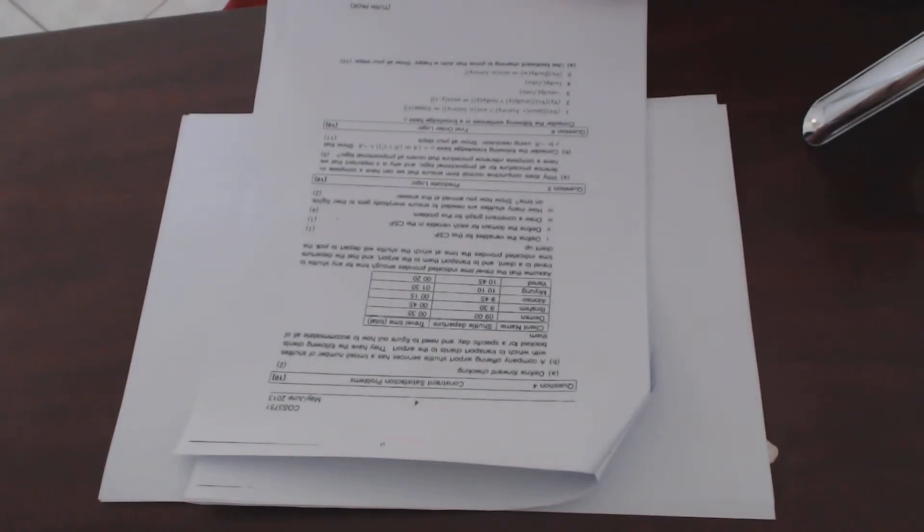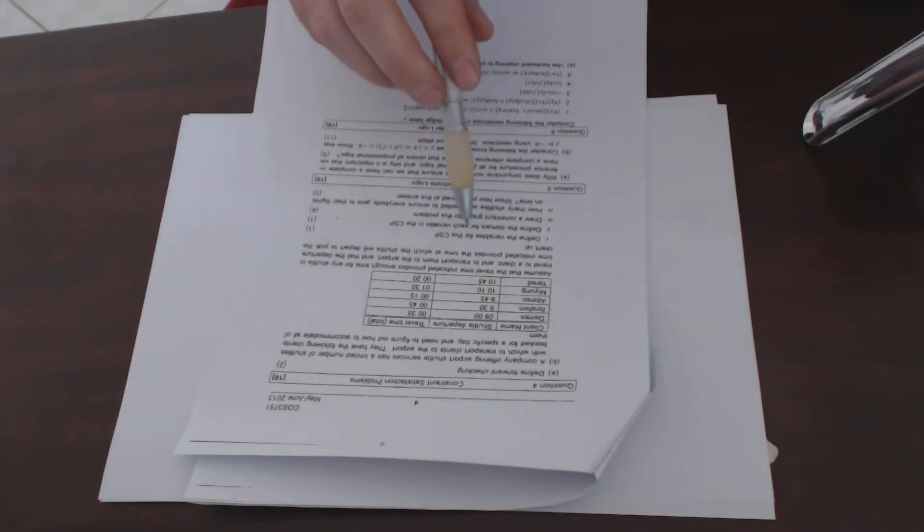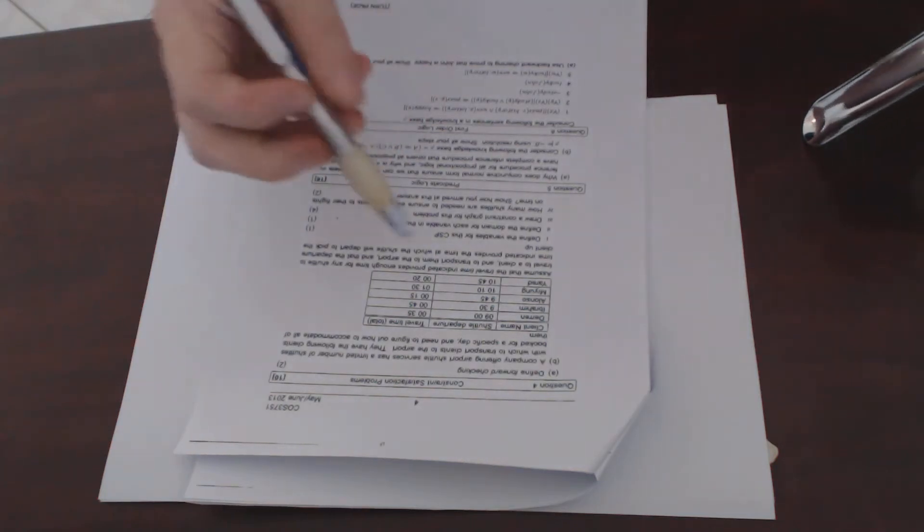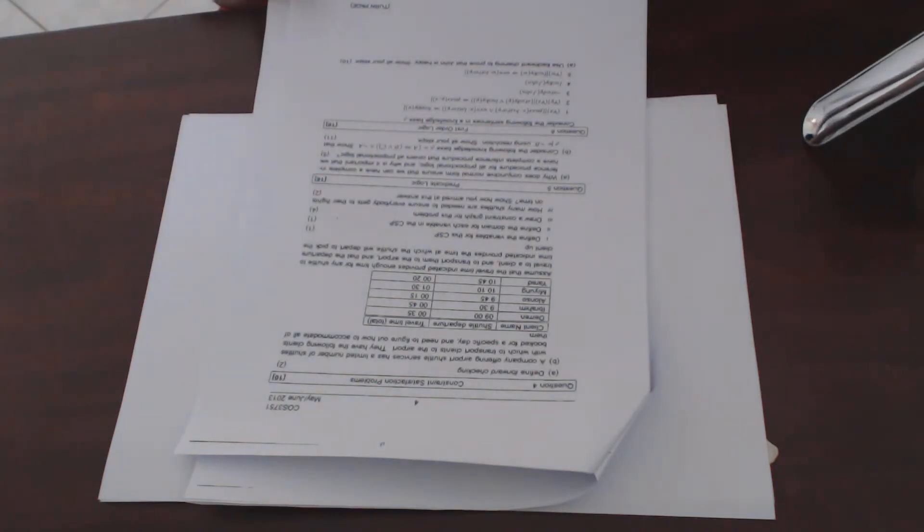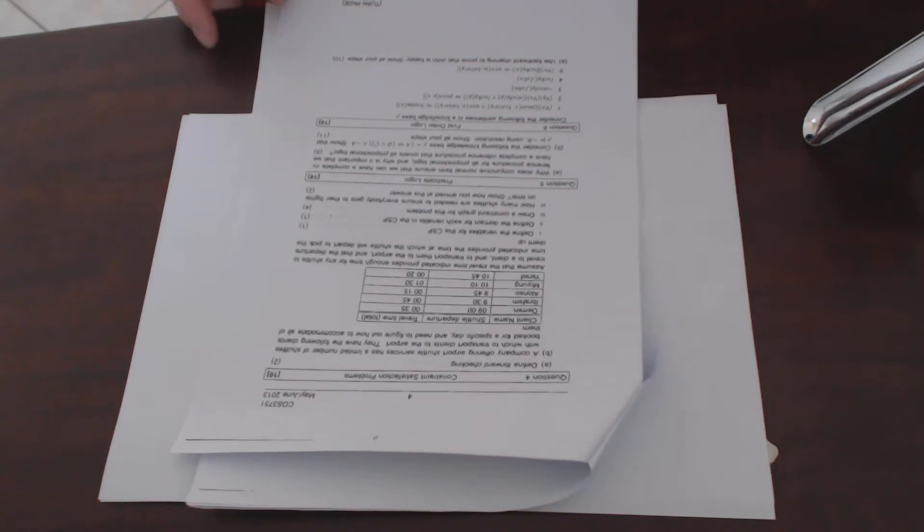Assume that the travel time indicator provides enough time for any shuttle to travel to a client and transport them to the airport, and that the departure time indicator provides the time at which the shuttle will depart to pick the client up. Part one of this question says define the variables for the CSP.